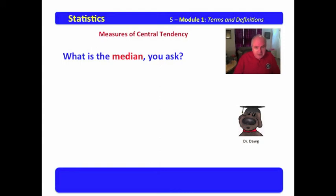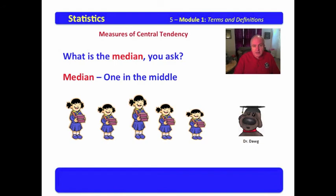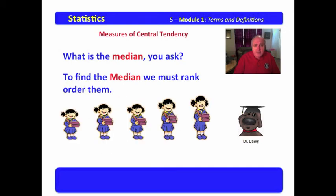What is the median, you ask? Why, thank you very much for asking that. The median is the middle value when you place the values in a rank order. Notice here we have the five Girl Scouts selling cookies, but we can't find the median yet because these Girl Scouts are not rank ordered. If you don't rank order them and you pick the middle, then you do not have the median. To find the median, we must rank order them. And we will start from the shortest to the tallest, or we could go from the tallest to the shortest. It doesn't matter.